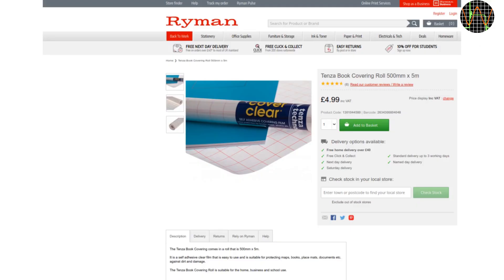For the covering, I use a clear self-adhesive protective film meant for protecting books. It is called Tensor and available in UK stationery shops like Ryman. A 0.5m x 5m roll costs about 5 pounds and will last you ages. They also sell smaller quantities.